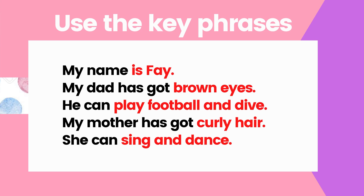Meanwhile, the words in red are the information about your family. Let's read together. My name is Faye. My dad has got brown eyes. He can play football and dive. My mother has got curly hair. She can sing and dance.